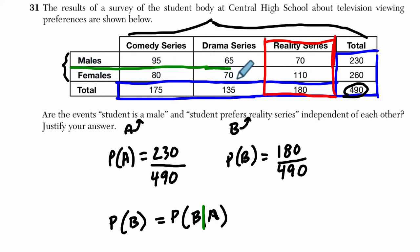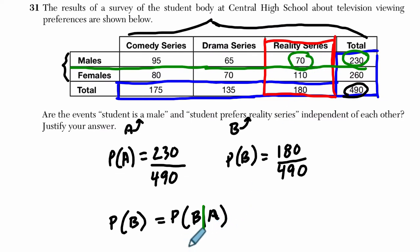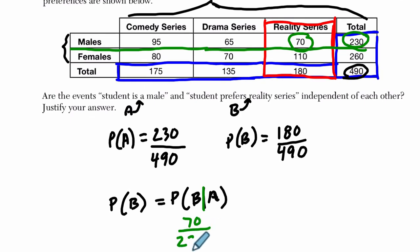And in that row, out of all of the males, 70 of them prefer a reality series. And that's out of all the males, 230. So if you know they're a male, given that they're a male, that's happened first, alright, there are 230 males. And then out of that 230, there are 70 that prefer a reality series. That's this probability right here. So that would be 70 out of 230.